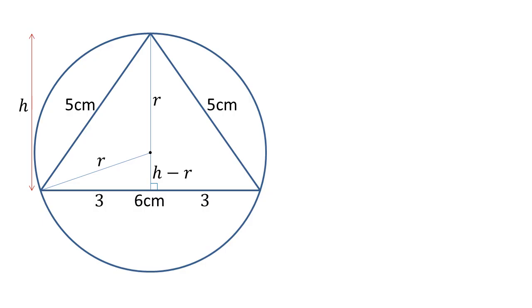So using Pythagoras's theorem, we can say that H squared is equal to the hypotenuse 5 squared minus the other side, 3 squared. 5 squared minus 3 squared is 16, so H must be 4cm.